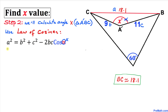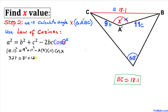Filling in the blanks: 18.1² = 9² + 11² − 2 × 9 × 11 × cos(x). Simplifying, we get 327 = 81 + 121 − 198·cos(x), which gives us 327 = 202 − 198·cos(x).